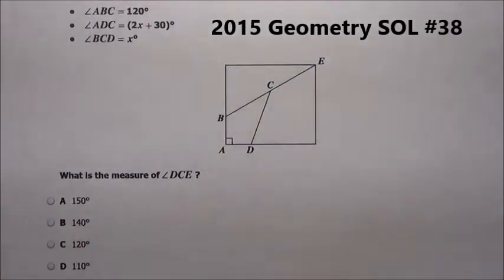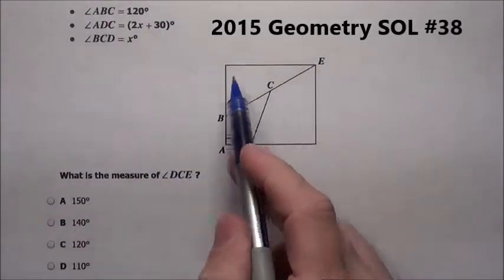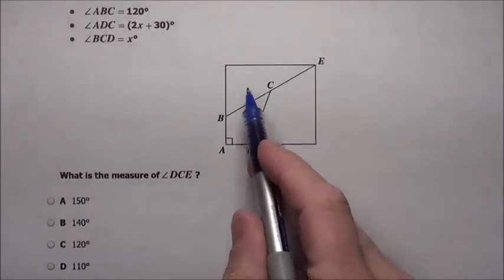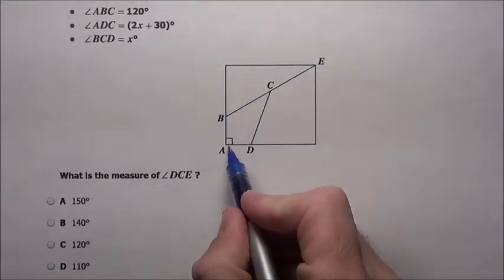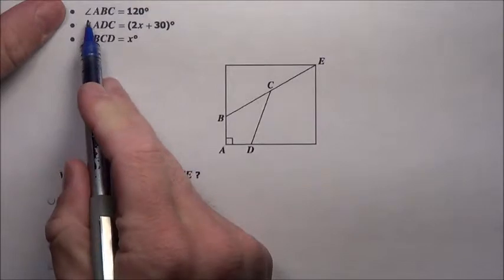Alright, here we go with problem 38. This figure represents the pattern of a quilt. We have 90 degrees here at A, and it tells us this other information.